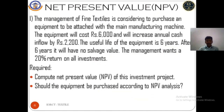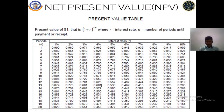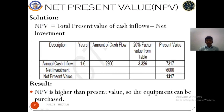The net investment given is 6,000. Dividing it by the cash inflow of 2,200, we get a value of approximately 2.727. We then find the 20% factor value from the present value annuity table. Looking at the table for 20% and 6 years, the factor value is approximately 3.326.